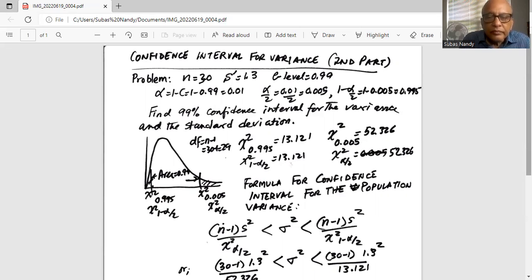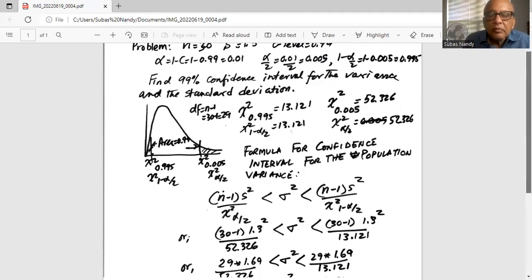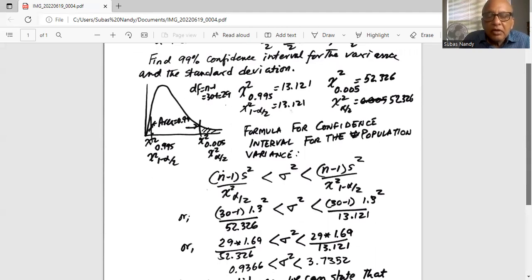So with this information we will use the formula for the confidence interval for the population variance as n minus 1 times s-square divided by chi-square alpha by 2 less than sigma square less than n minus 1 times s-square divided by chi-square 1 minus alpha by 2. So chi-square alpha by 2 is the right critical value. Chi-square 1 minus alpha by 2 is the left critical value of chi-square.